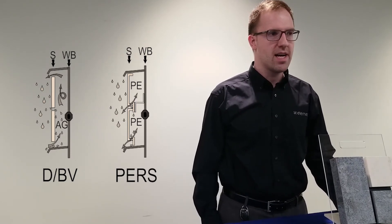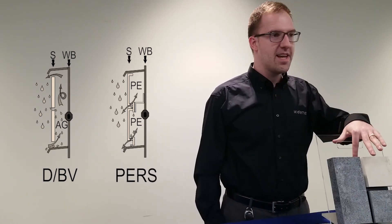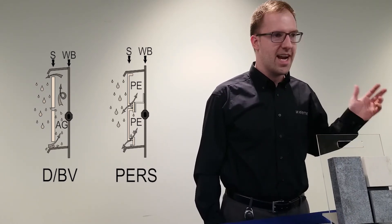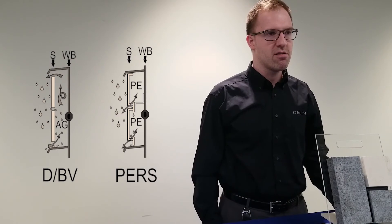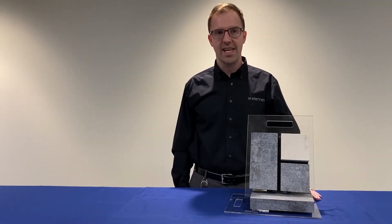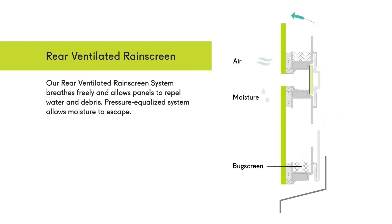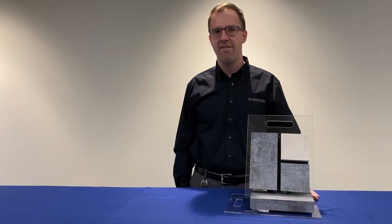A pressure equalized rain screen is a closed joint system via infill strips that act as air dams in both the vertical and horizontal joints. That air pressure equalizes and keeps the rain and snow from getting driven into the wall cavity. This significantly reduces the amount of moisture that goes into our system. All of our systems have passed the AAMA 508-07 test for pressure equalization.